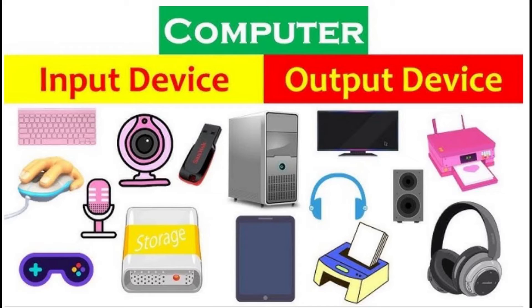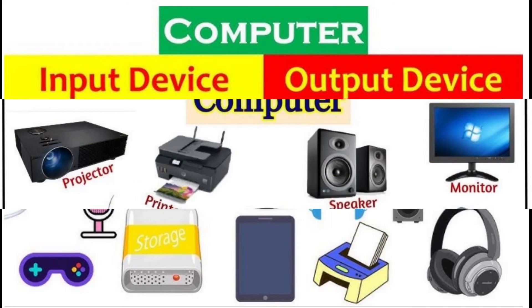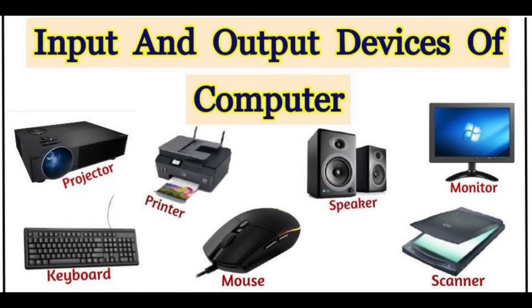5. Special Purpose keys: Keyboard also contains some special purpose keys such as Enter, Shift, Caps Lock, Number Lock, Spacebar, Tab, and Print Screen. Mouse is the most popular pointing device. It is a very famous cursor control device having a small palm-sized box with a round ball at its base, which senses the movement of the mouse and sends corresponding signals to the CPU when the mouse buttons are pressed. Generally, it has two buttons called the left and the right button and a wheel is present between the buttons. A mouse can be used to control the position of the cursor on the screen, but it cannot be used to enter text into the computer. Advantages: easy to use, not very expensive, moves the cursor faster than the arrow keys of the keyboard.